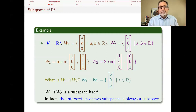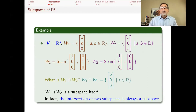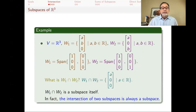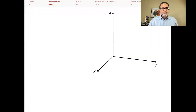Whenever you have two subspaces, their intersection is a subspace. That's a fact that needs a little proof: you show that the zero vector is there, it's closed under addition, and closed under scalar multiplication, so the intersection is a subspace.